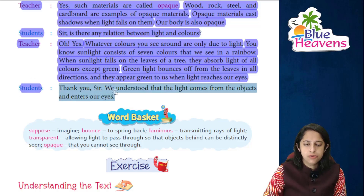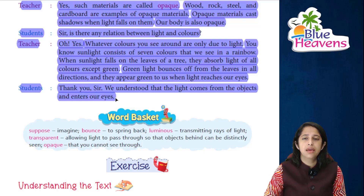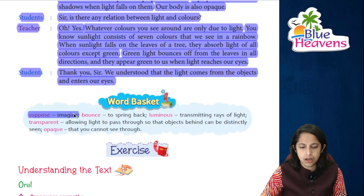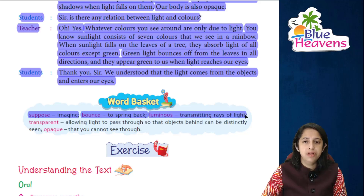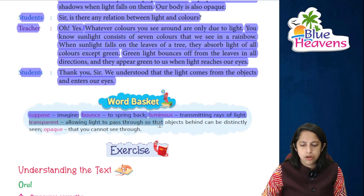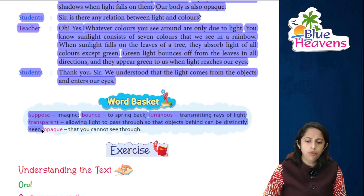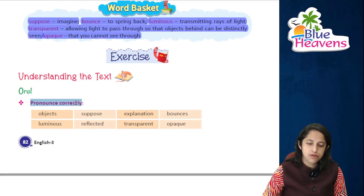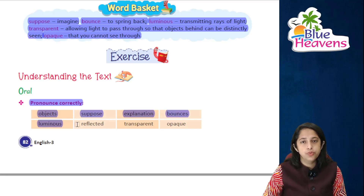Students say: thank you sir, we understood that light comes from the object and enters our eyes. Moving on to the word basket: 'suppose' means to imagine; 'bounce' means to spring back or reflect; 'luminous' means transmitting rays of light; 'transparent' means allowing light to pass so that objects can be distinctly seen; and 'opaque' means that light cannot pass through it.